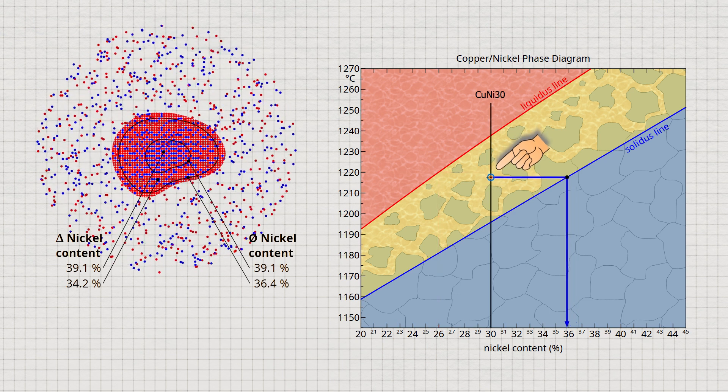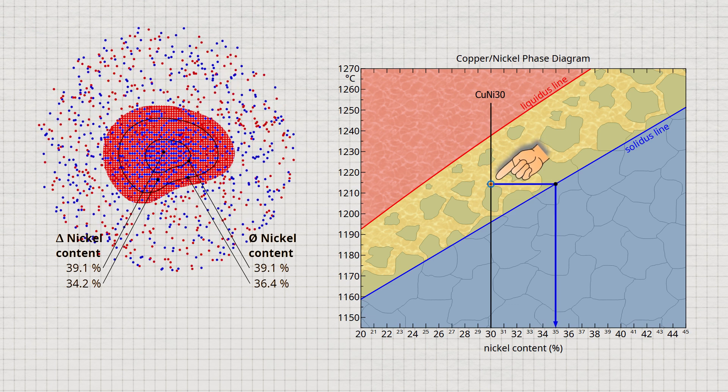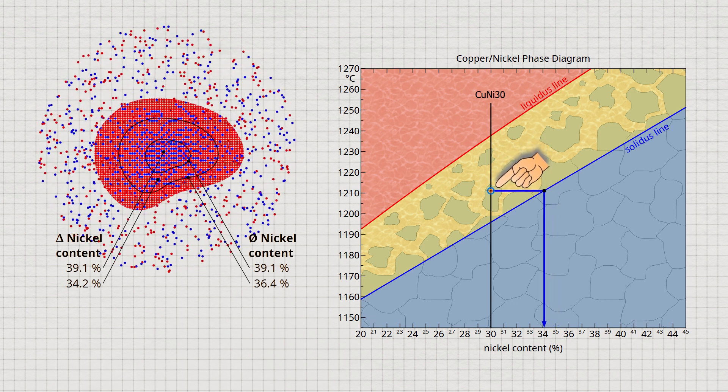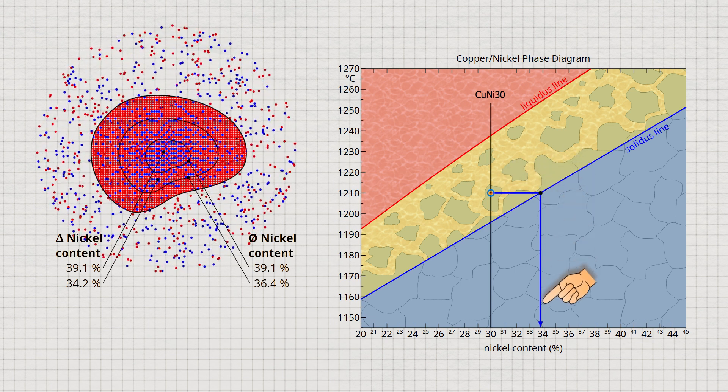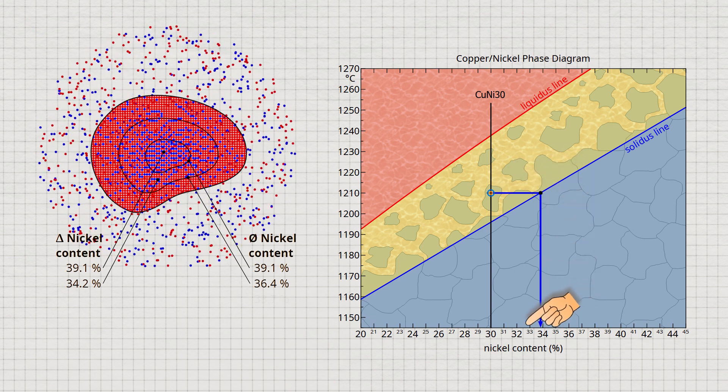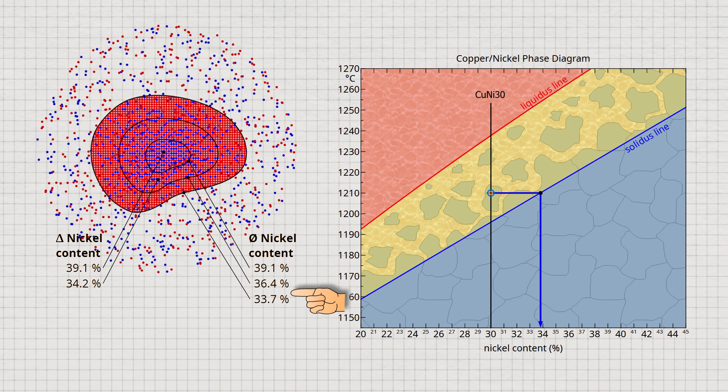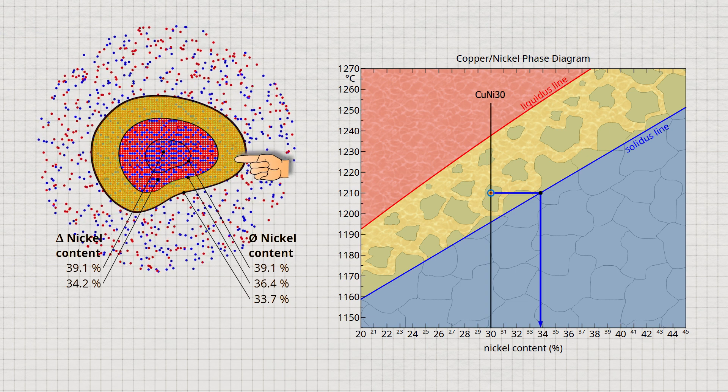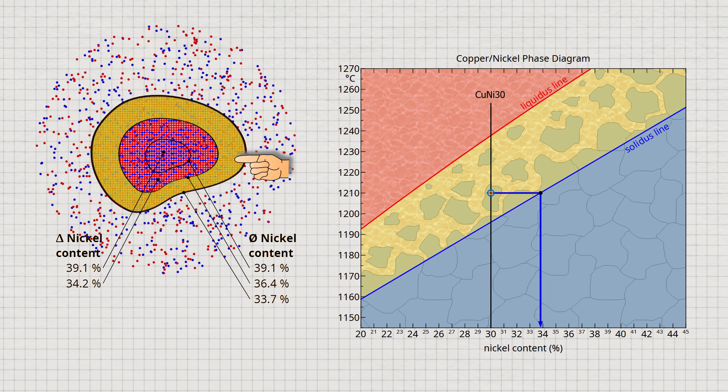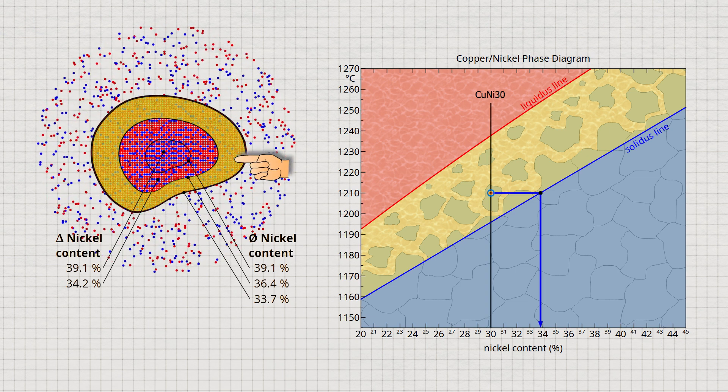Let us now consider the further cooling to a temperature of 1,210 degrees Celsius. At this temperature, the solid solution solidified up to this point consists of an average of 33.7% nickel, whereas before it was 36.4%. Obviously, the solidified layer in this temperature range must have a lower nickel concentration than the previous layer. In this case, the nickel content in the newly formed layer is actually only 29.2%.